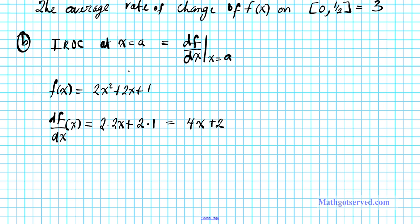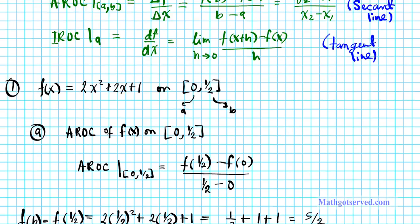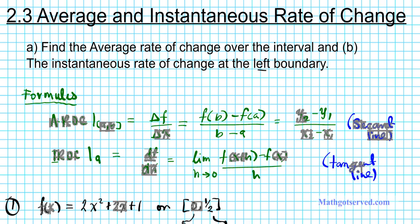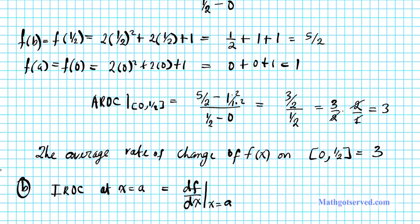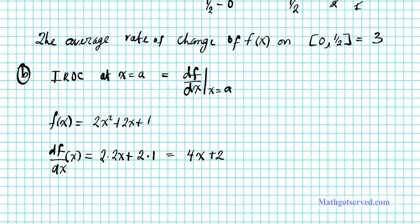But we are asked to compute the instantaneous rate of change at the left boundary. So we're looking for the instantaneous rate of change at 0 which is the left boundary. So we're looking for df dx at x equals 0. Another way to write this if you don't like this notation is f prime of 0. How do you compute f prime of 0? You simply plug in 0 into the derivative. 4 times 0 plus 2.